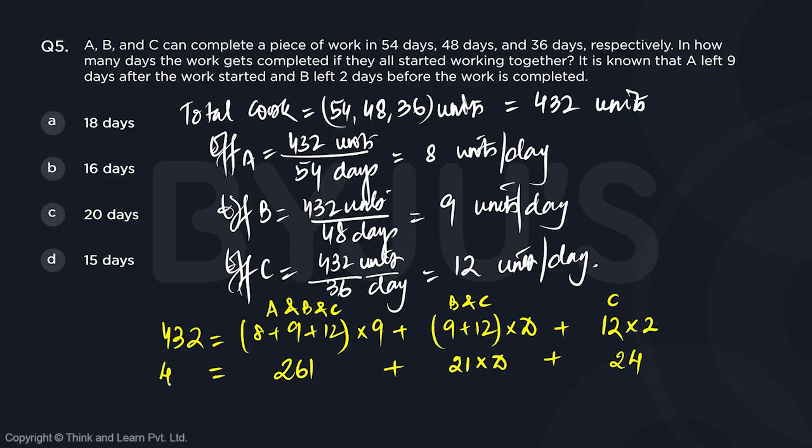So if we solve this, 432 minus 285, which will give us 147. So D is going to be 147 upon 21, which will result in 7 days.